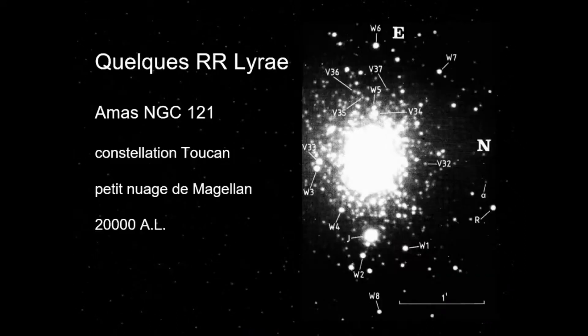Voici une photo de l'amas NGC-121 dans les Petits Nuages de Magellan, à environ 200 000 années-lumière. Tous ces points répertoriés — V1, V32, etc. — sont des RR Lyrae dans cet amas globulaire. Il y en a pas mal — c'est une belle démonstration.